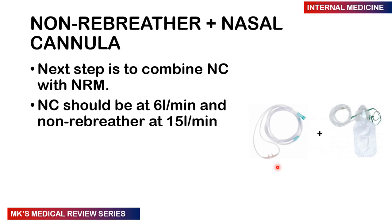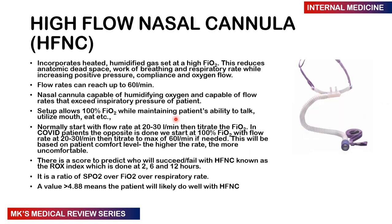If the non-rebreather mask alone isn't sufficient, you can combine a non-rebreather mask at 15 liters per minute with a nasal cannula at 6 liters per minute, giving a total of about 21 liters per minute theoretically. If the patient still doesn't improve after escalating from nasal cannula to simple face mask to Venturi mask, then combining non-rebreather mask plus nasal cannula, and still no improvement — then you escalate to a high flow nasal cannula.